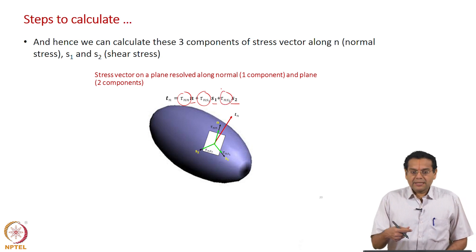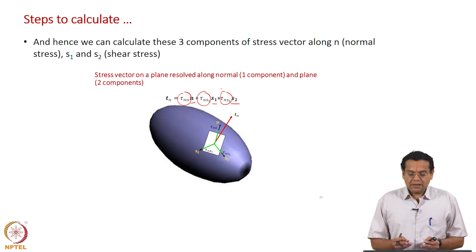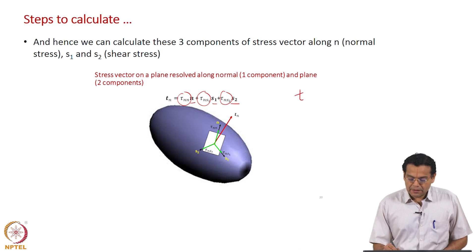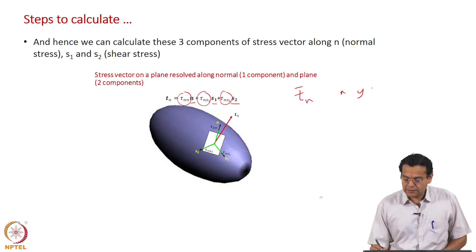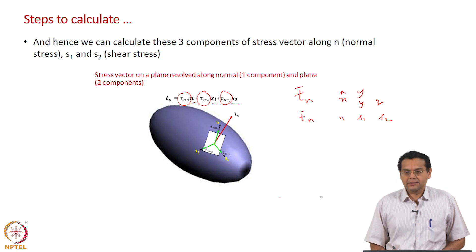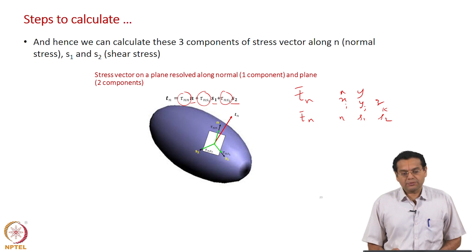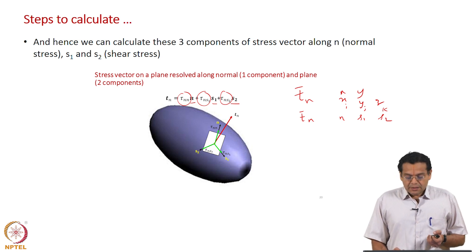The second step — resolving Tn from x, y, z components to n, s1, s2 directions — is simple, pure mathematics. If you have a vector resolved along x, y, z axes, you can resolve it along any other coordinate axis easily. So if you know Tn resolved along i, j, k, you can resolve it along n, s1, and s2 directions. The first step will be discussed later.